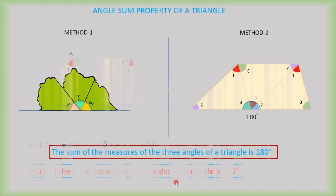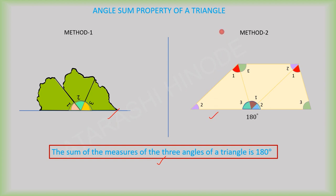Here also, we get the sum of the measures of the three angles of a triangle is 180 degrees. We have observed the same fact in two different ways — that is the angle sum property of a triangle.